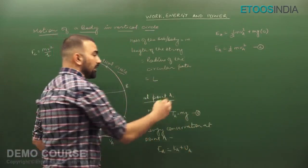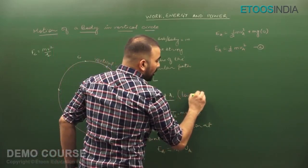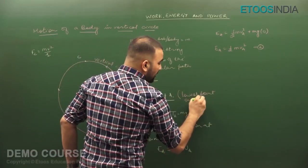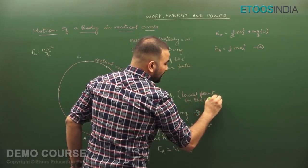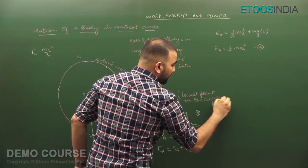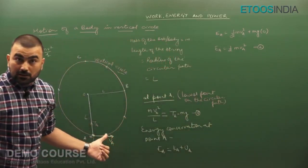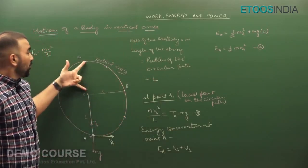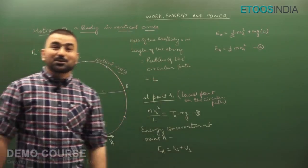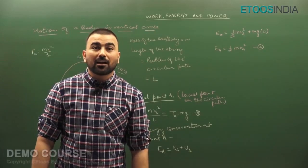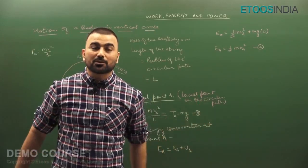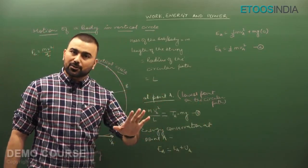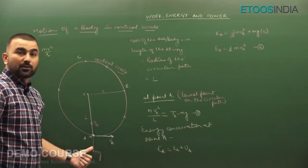At the lowest point A on the circular path, the body moves upward. The string is inextensible — it cannot stretch no matter how much force is applied; it only generates tension. So tension at point A equals Mg at the critical condition. Now let's consider point C, the top point.